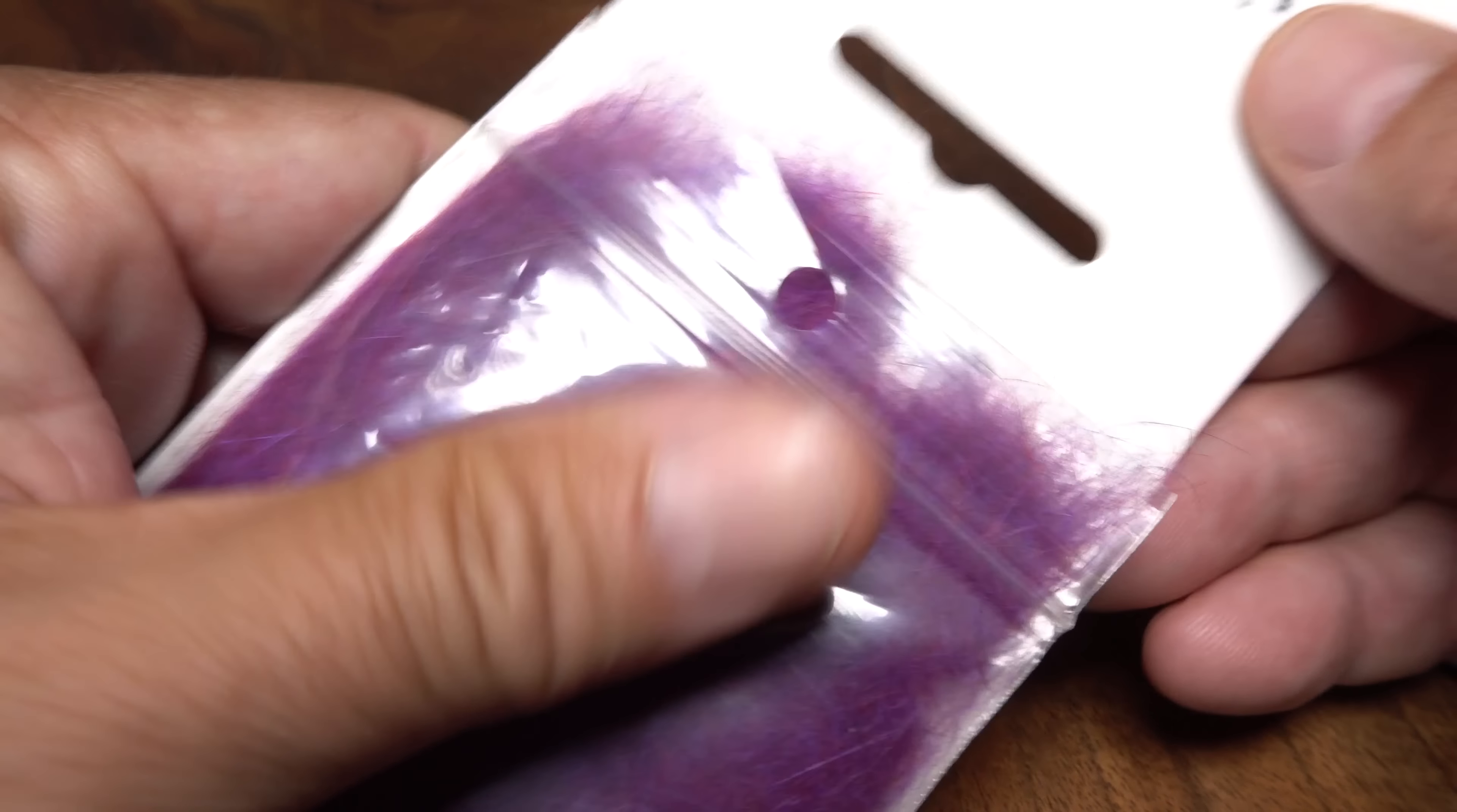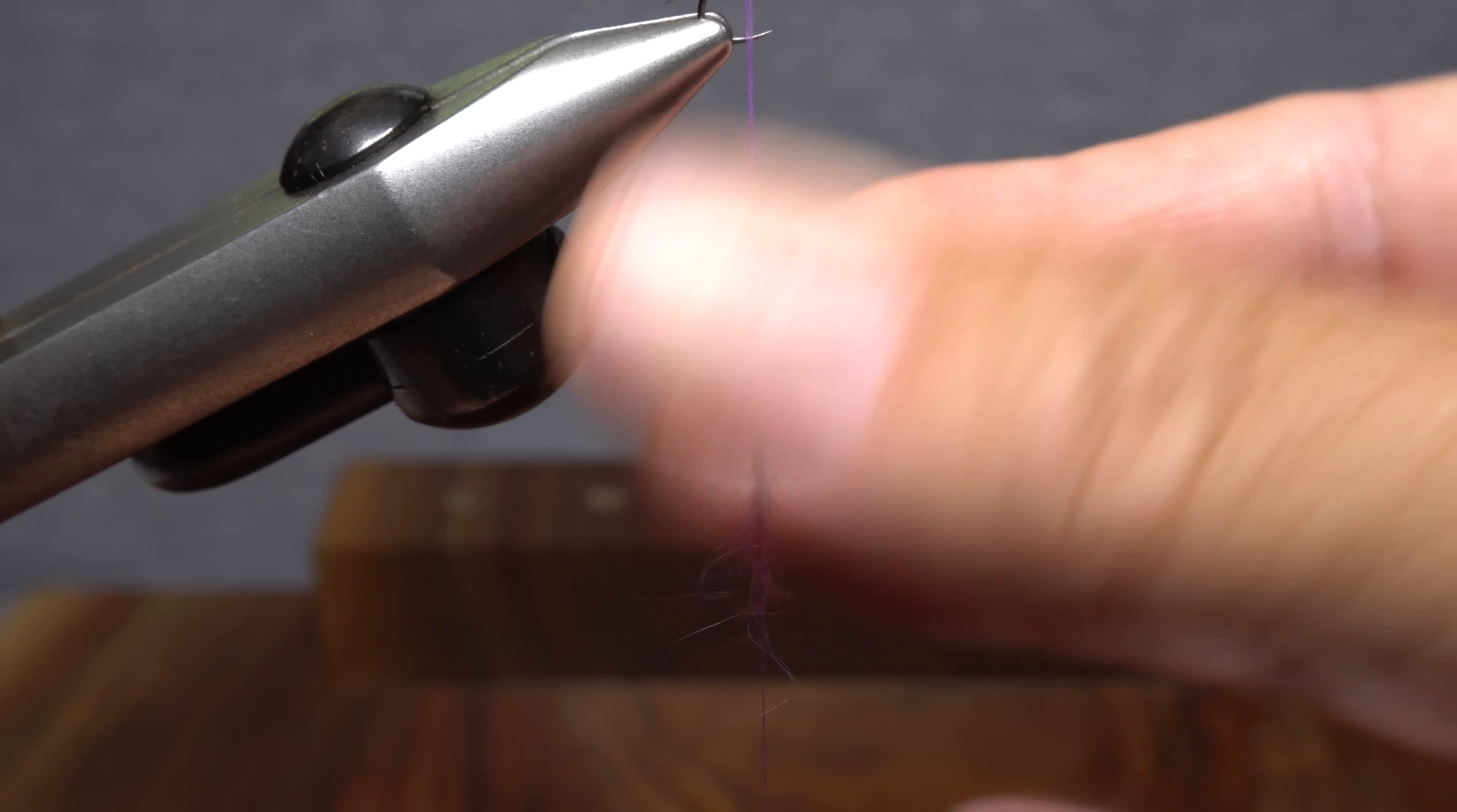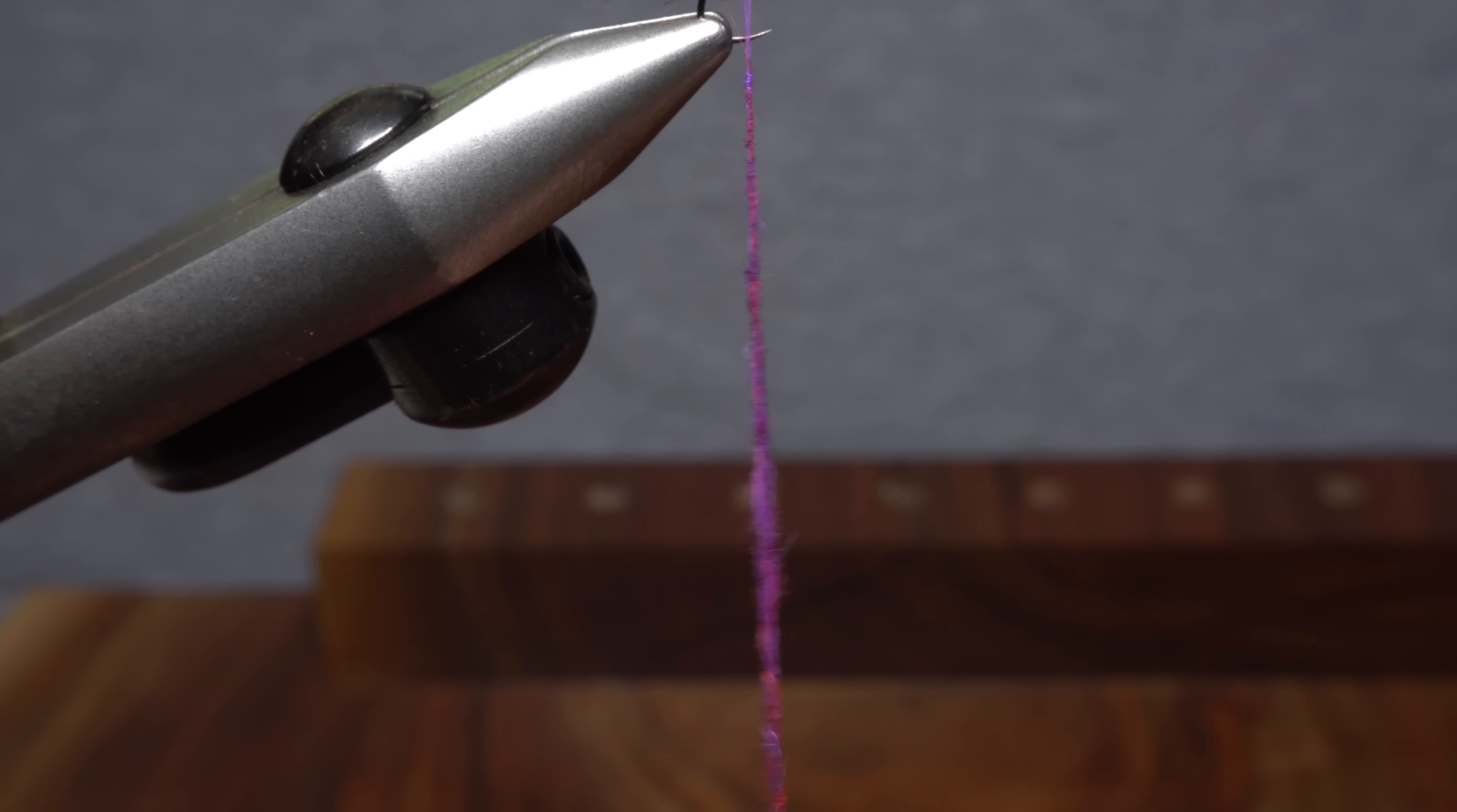Purple rabbit fur dubbing is used to create the body of the fly. Pull a small clump free from the packet and use it to produce a slender dubbing noodle on your tying thread that's about two inches in length and tapered at both ends.